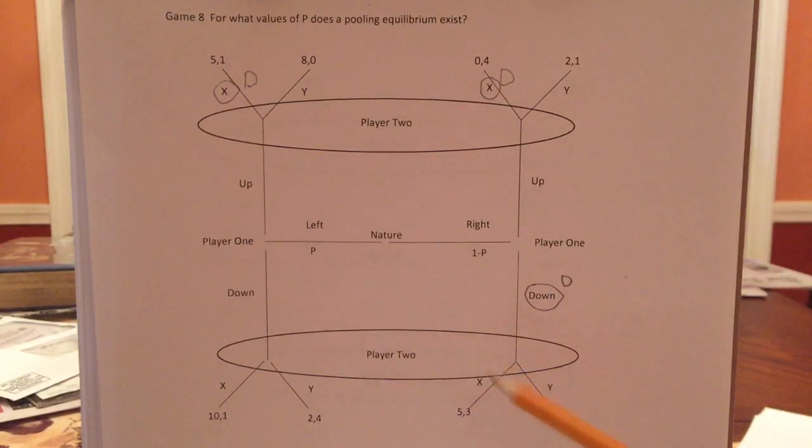And for player two, if player two is told down, player two would know, hey, I know I'm either here. I'm either in a separate equilibrium where I'm here or I'm in a pooling equilibrium.